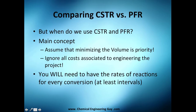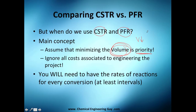So when do we use a CSTR and when do we use a PFR? This is a tricky but very important question, especially if you are a reactor engineer, because the main concept here is to minimize the volume — that is the priority. So we want to decrease the volume, and which one shall we use?